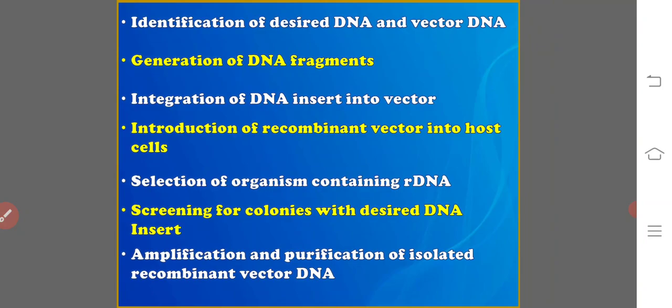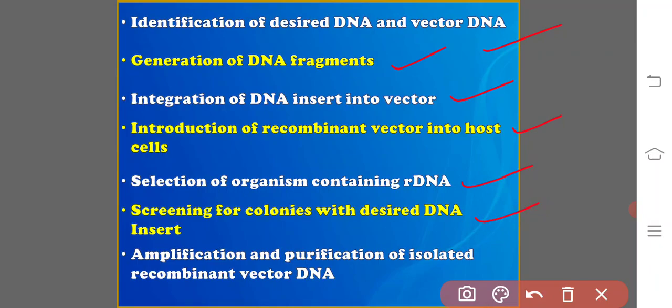The seven steps of gene cloning are: 1) Identification of desired DNA and vector DNA; 2) Generation of DNA fragments; 3) Integration of DNA insert into vector; 4) Introduction of recombinant vector into host cells; 5) Selection of organism containing rDNA; 6) Screening for colonies with desired DNA insert; 7) Amplification and purification of isolated recombinant vector DNA.